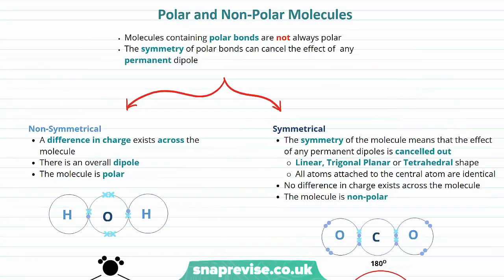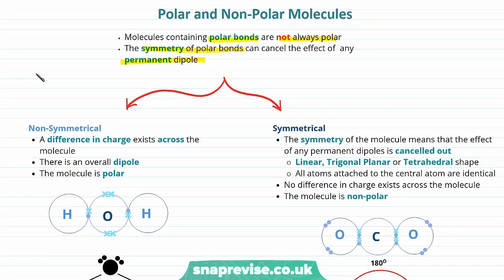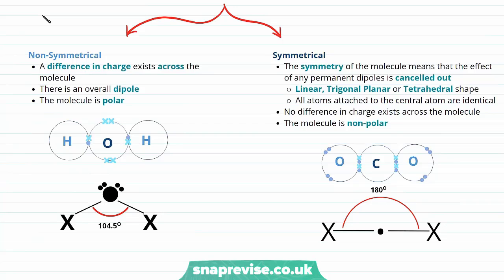Molecules containing polar bonds are not always polar - the symmetry of polar bonds within a molecule can cancel out the effect of any permanent dipole. In a non-symmetrical molecule, a difference in charge exists across the molecule and there is an overall dipole, making it polar. Water has two lone pairs and two bonding pairs of electrons, taking a non-linear shape with a bond angle of 104.5 degrees. It's non-symmetrical, meaning the dipoles from the oxygen-hydrogen bonds cannot cancel each other out.